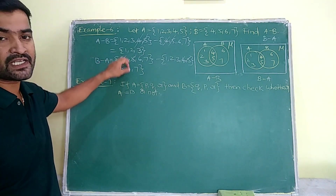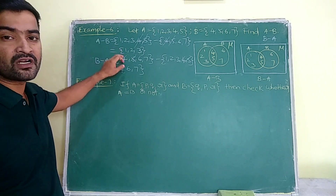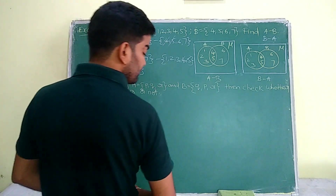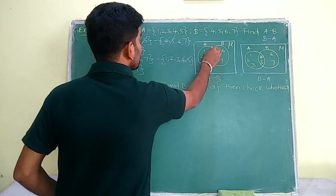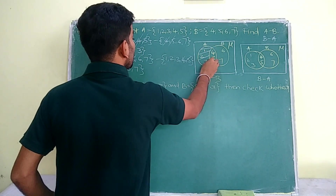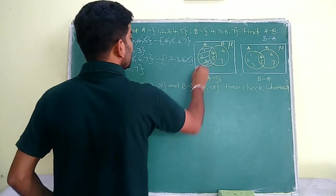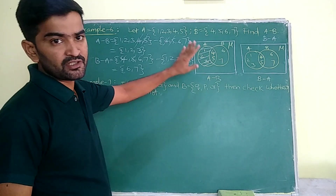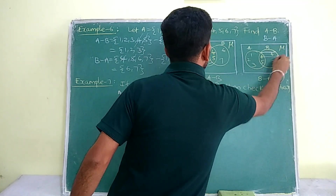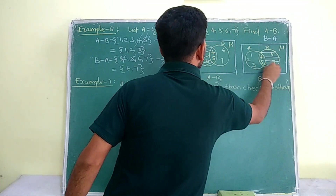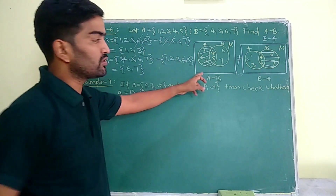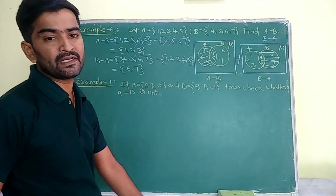Are A minus B and B minus A the same? No. A minus B is not equal to B minus A. In the Venn diagram, A minus B means only the A region is shaded, and B minus A means only the B region is shaded. That is why A minus B is not equal to B minus A — this is a very important observation.